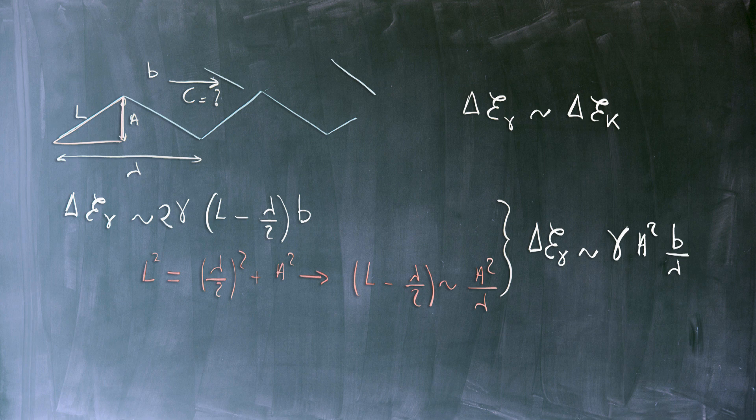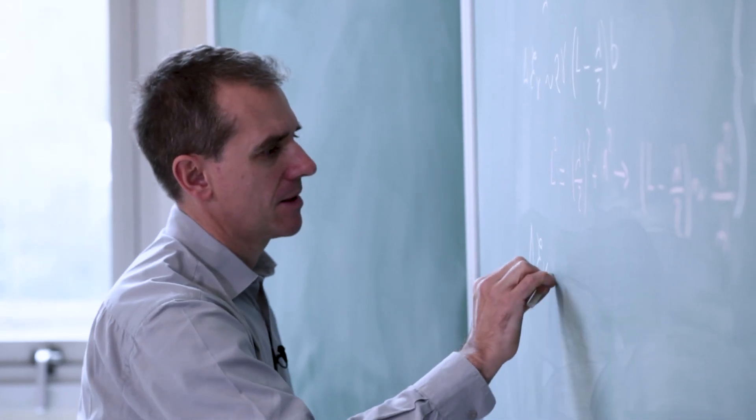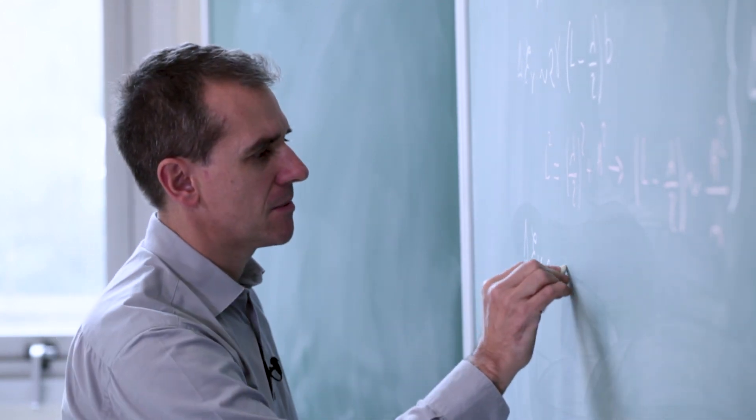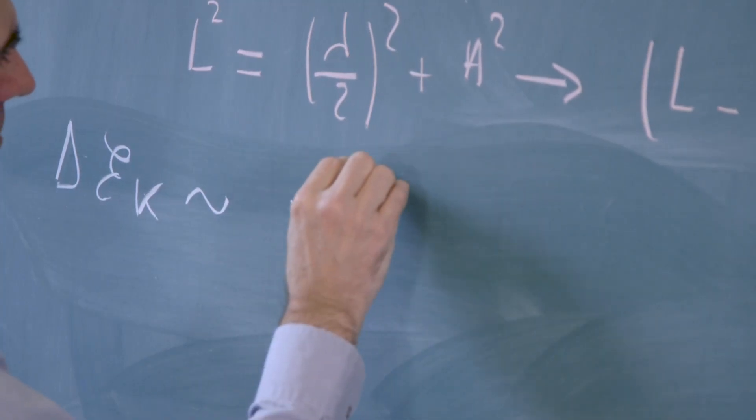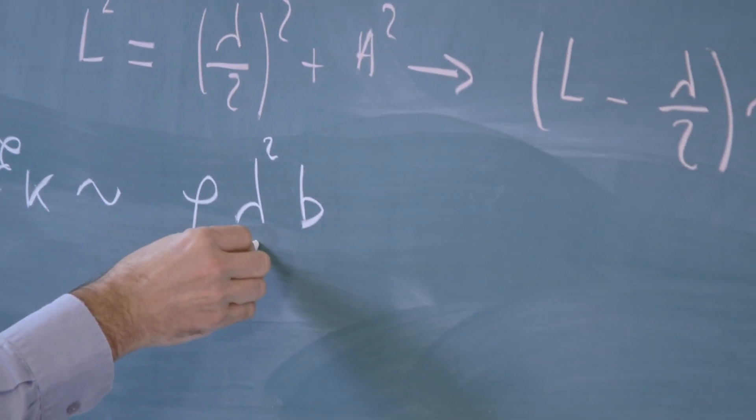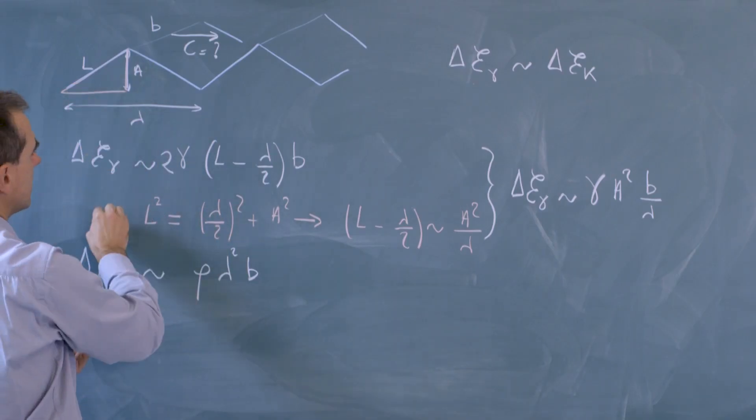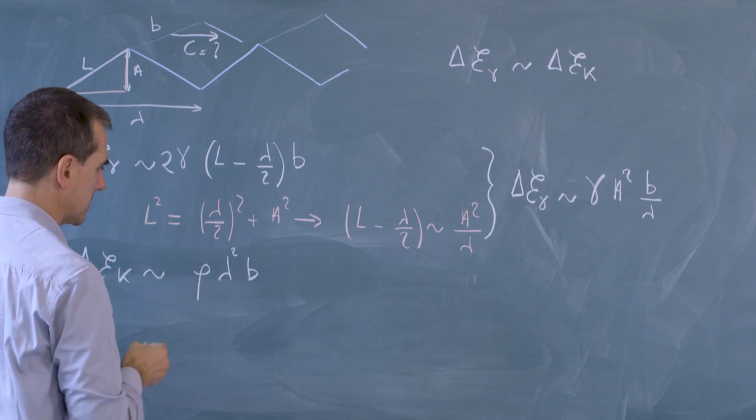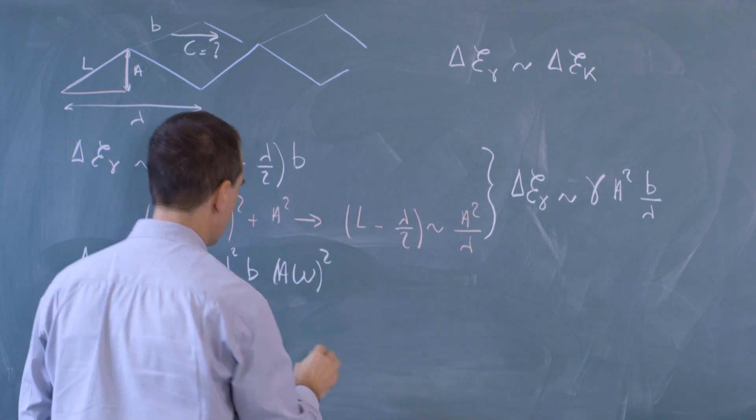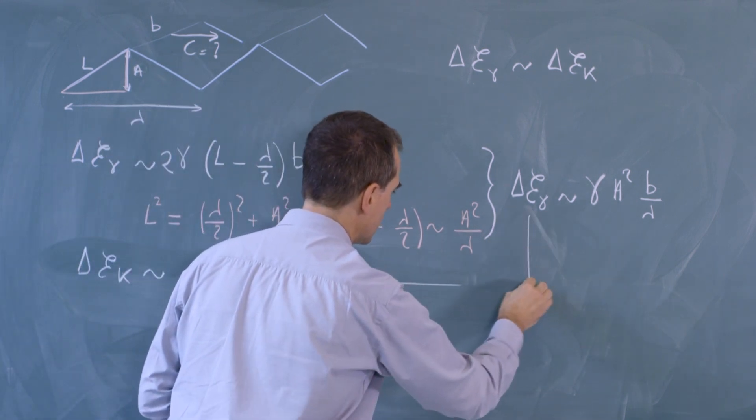The second one is the kinetic energy, which is going to go like the mass times the velocity squared. So the mass is the mass that is put into motion, so it goes like rho lambda squared b. Here we use the information that the perturbation extends into the liquid over a length scale lambda. And the characteristic velocity is a omega squared.